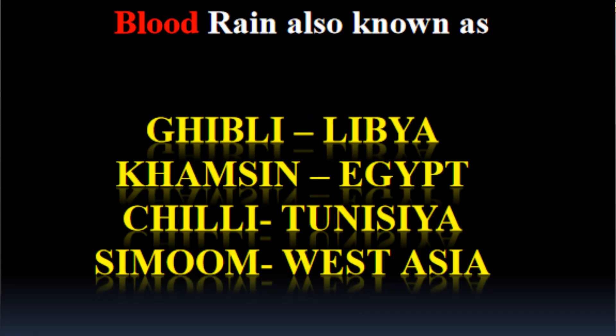Being a local phenomenon, blood rain — also known as Sirocco — has different names in different countries. For example, it is known as Ghibli in Libya, Khamsin in Egypt and Tunisia, Chile in another region, and Simom in West Asia.